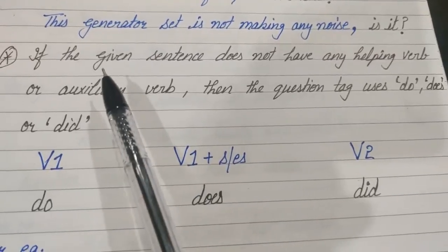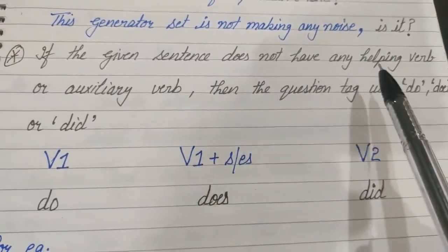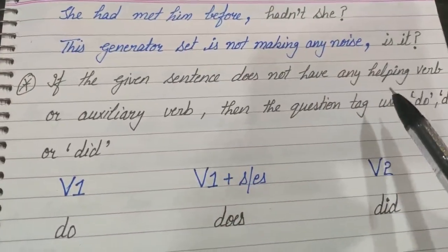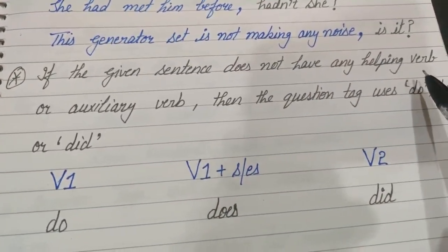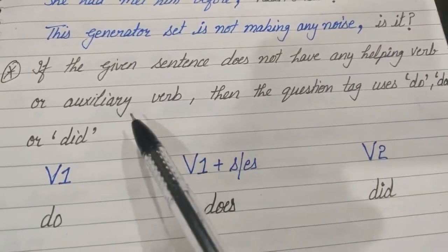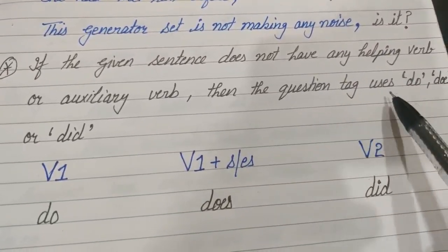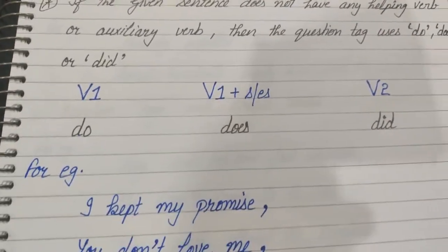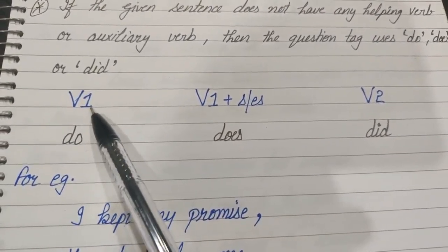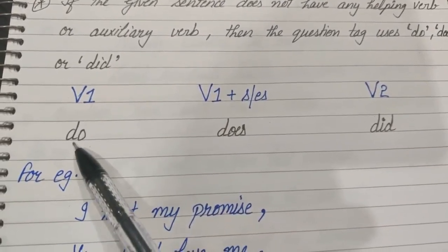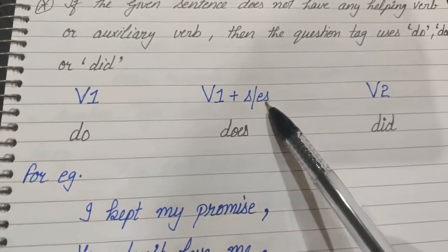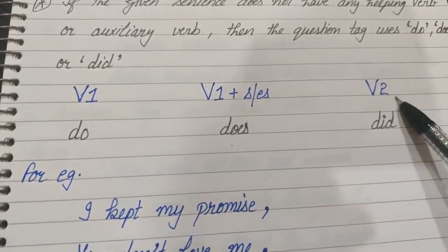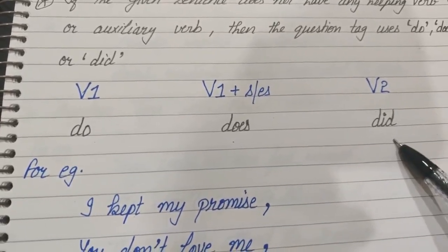Now let's discuss rule number two: if the given sentence does not have any helping verb or auxiliary verb, then the tag must use 'do,' 'does,' or 'did.' For a base verb V1, we use 'do.' If the verb is V1 plus s or es, we use 'does.' If the verb is V2 (past tense), we use 'did.'